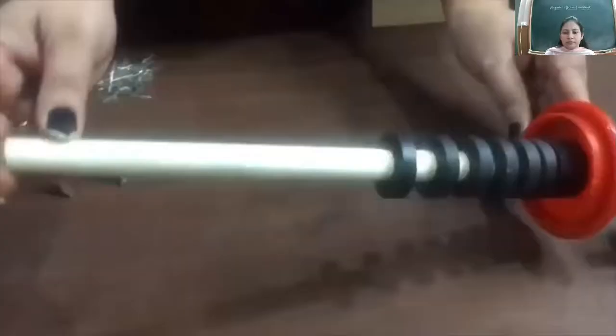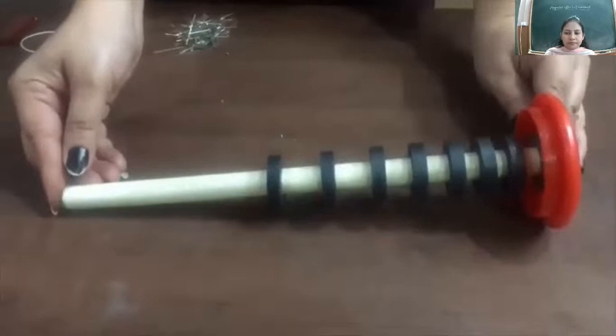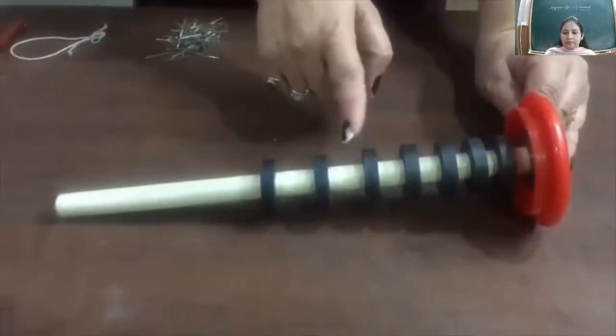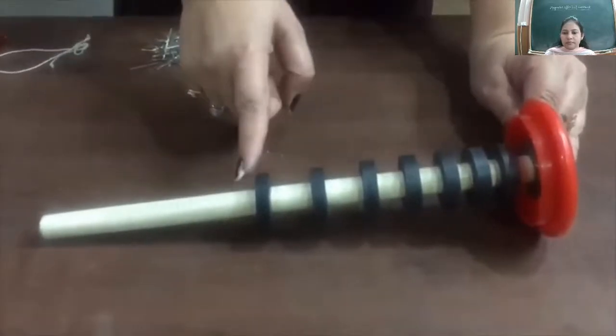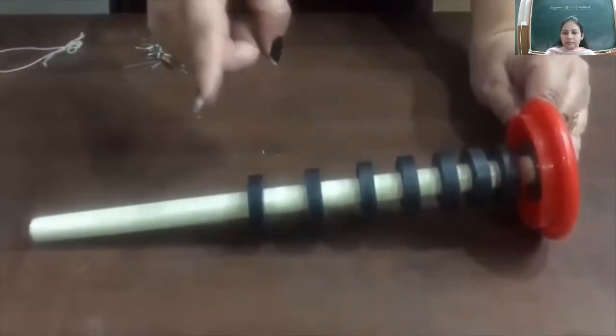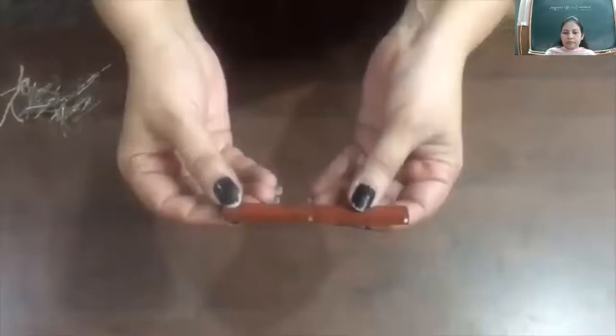You can get an idea of repulsion with the floating ring system. If I place the magnets this way, you can notice there is a different distance between the magnets, and that distance is directly related to the weight of the magnets.